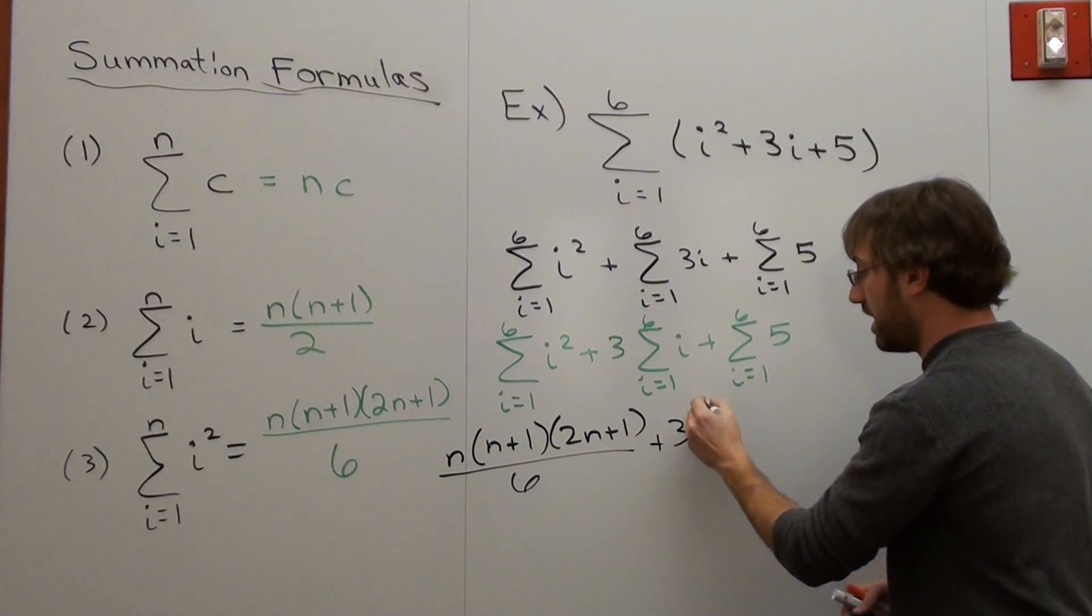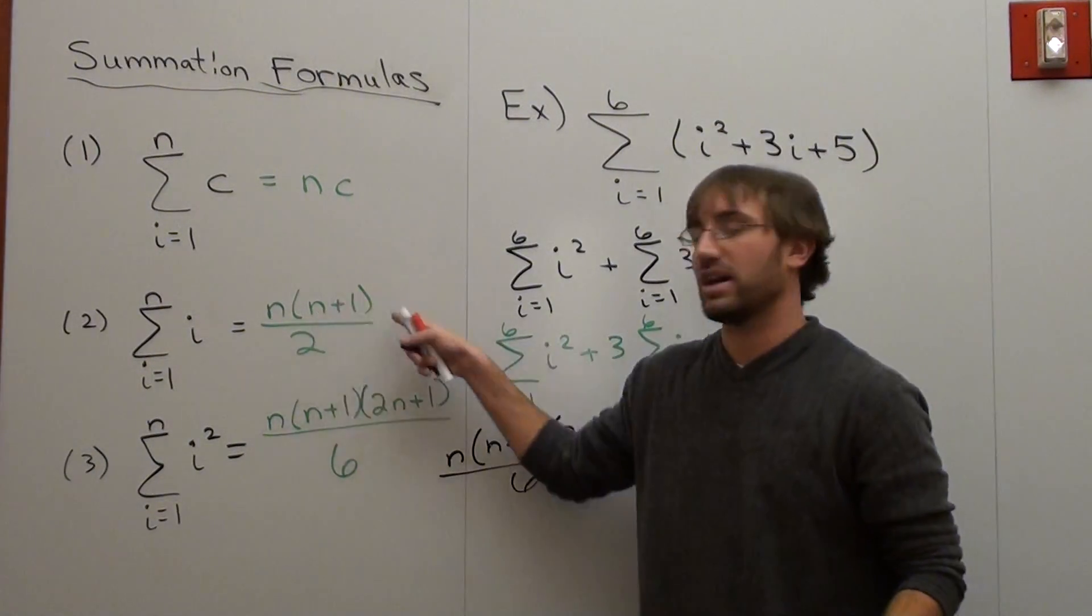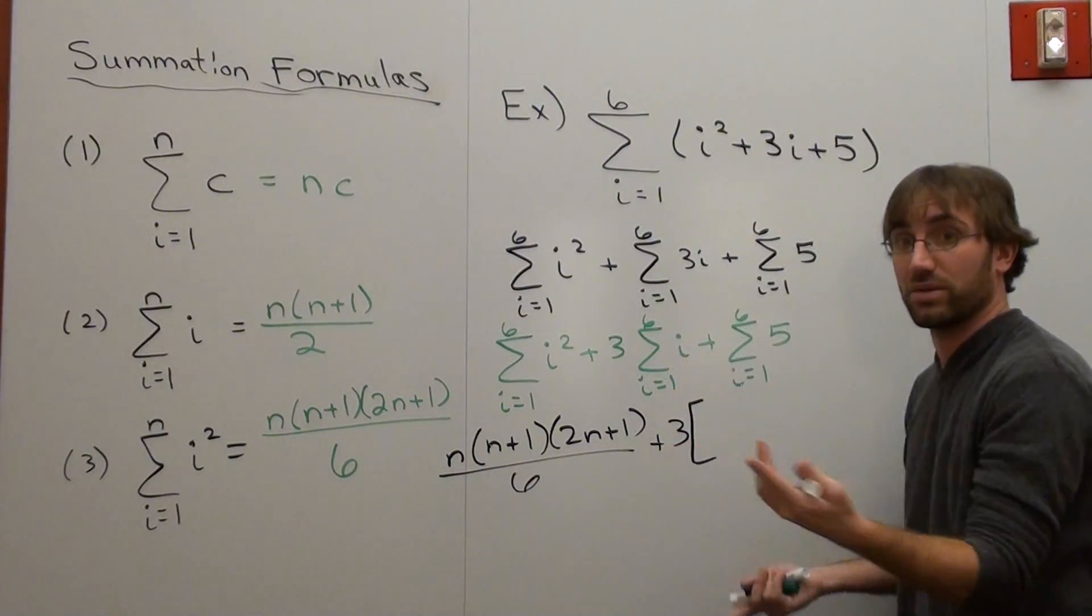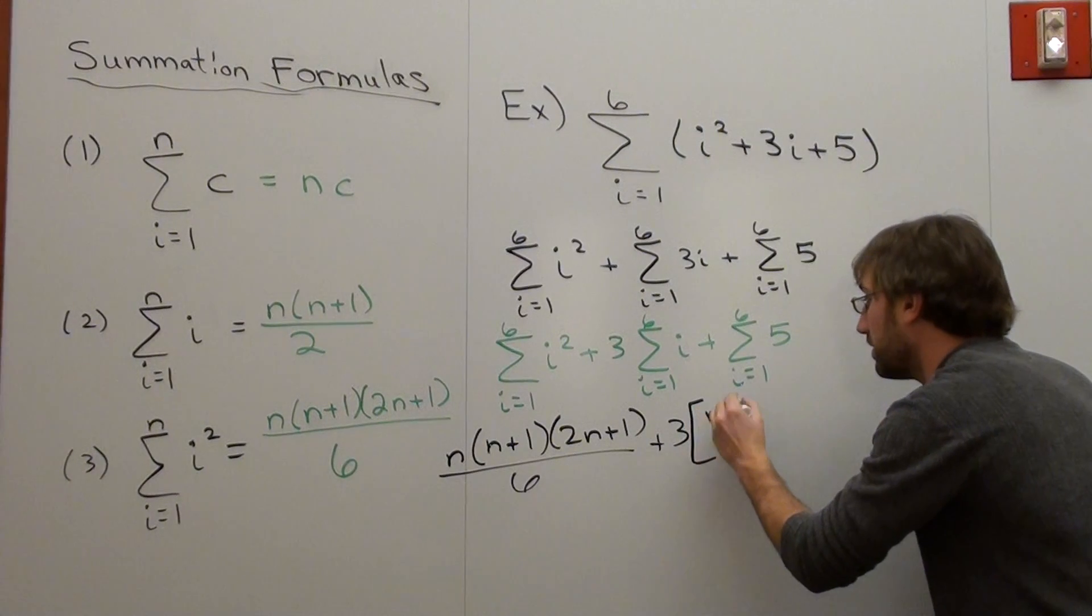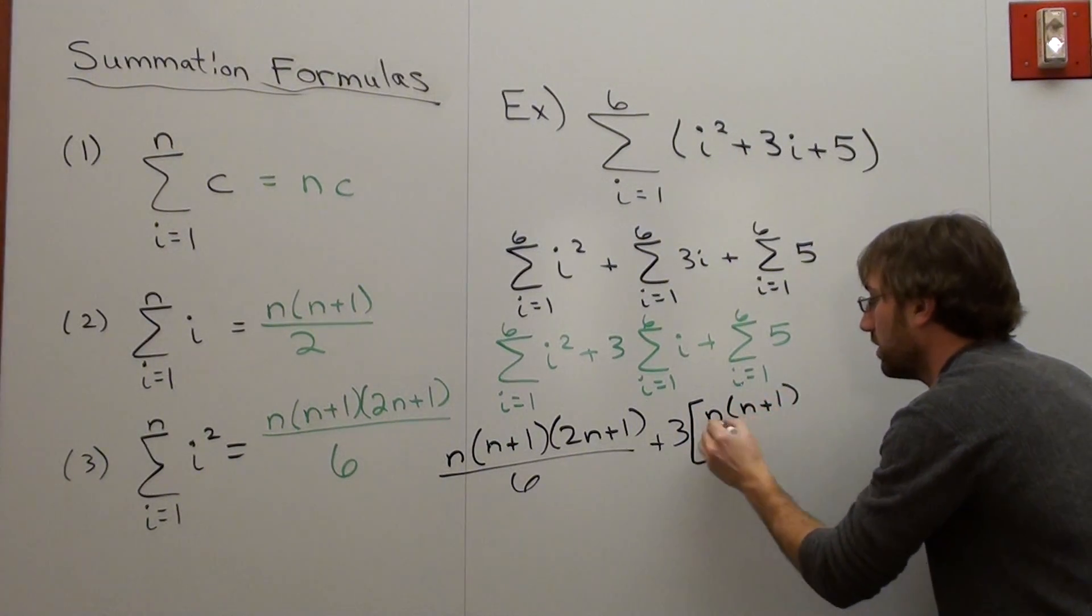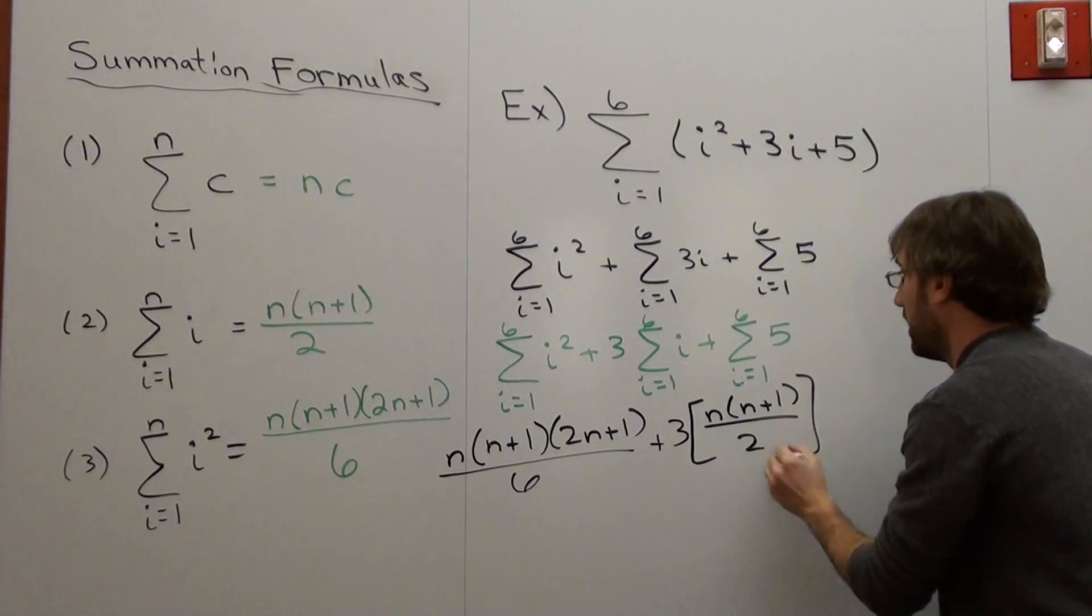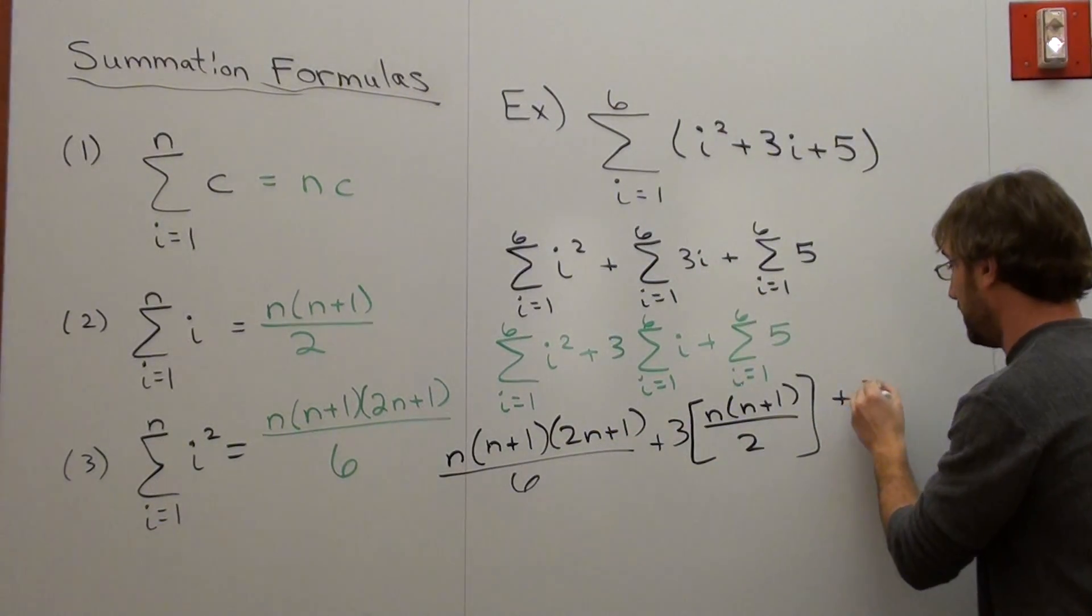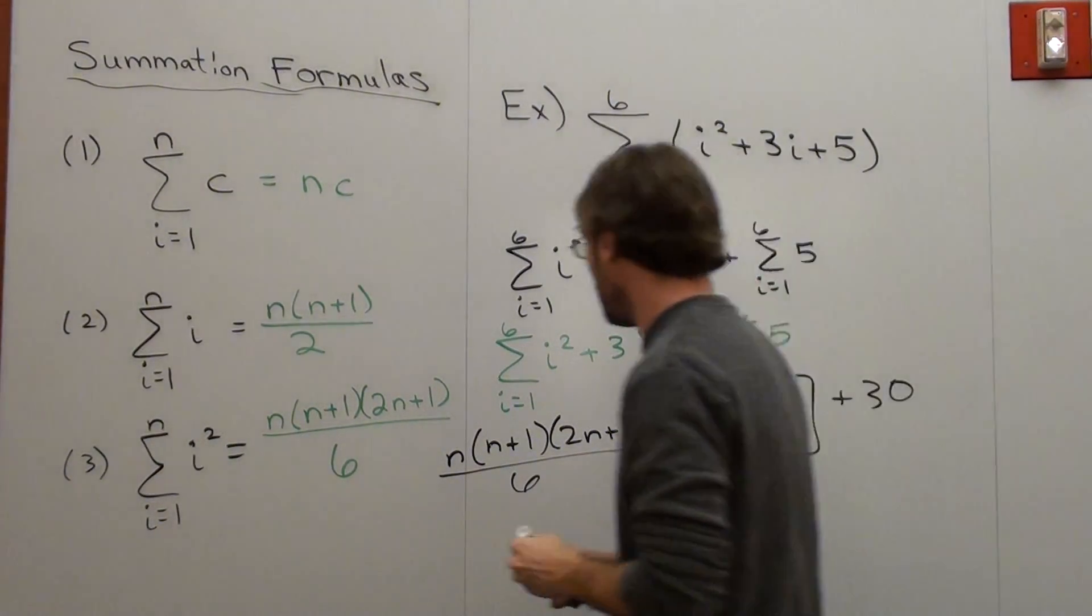Plus 3 times n times (n+1) over 2. And we put the 3 out in front because we're going to multiply everything by 3 afterwards. n(n+1)/2. And then this one's just 30. I wish they were all that easy. But they are not.